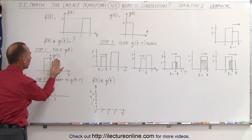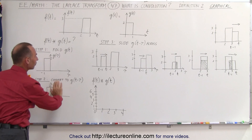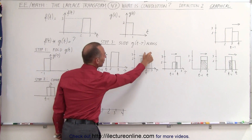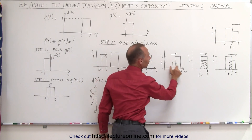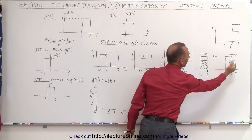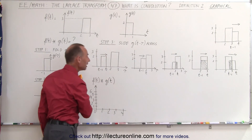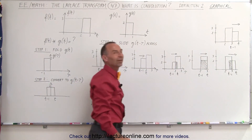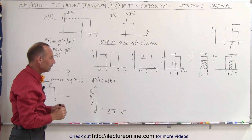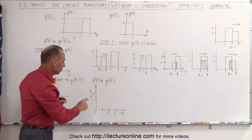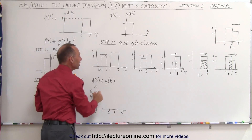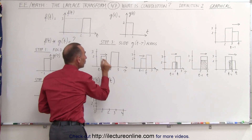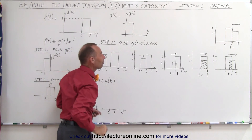As you begin to slide the folded g of t across, you can see that eventually it will reach the other function, begin to overlap the other function, completely overlap the other function, and then continue to move until it's completely past f of t. The convolution of f of t and g of t is simply the product of the two values of the two functions multiplied times the amount of the overlap.